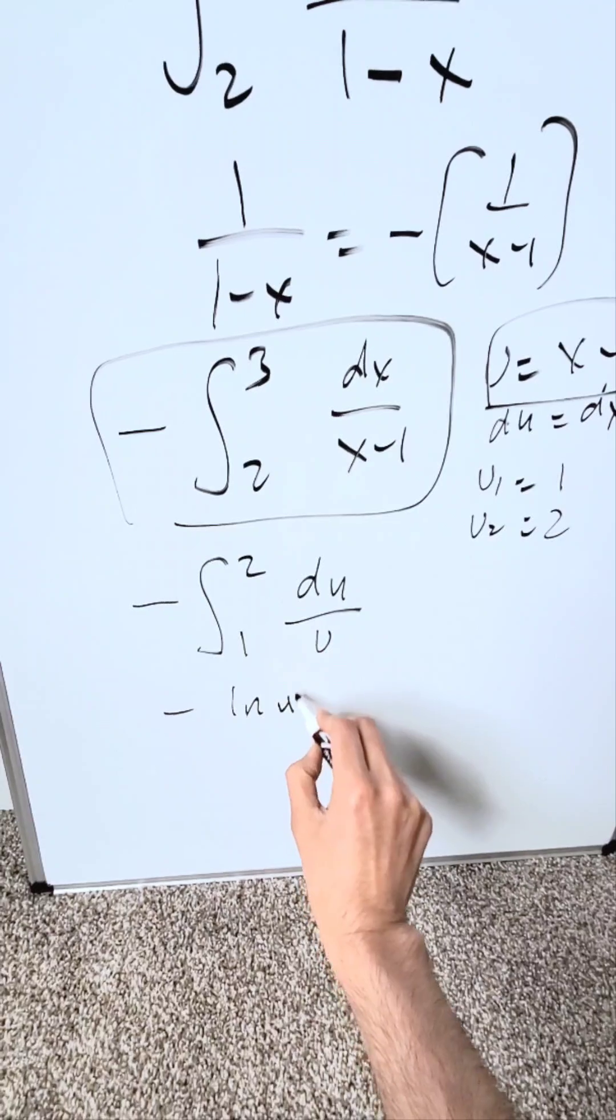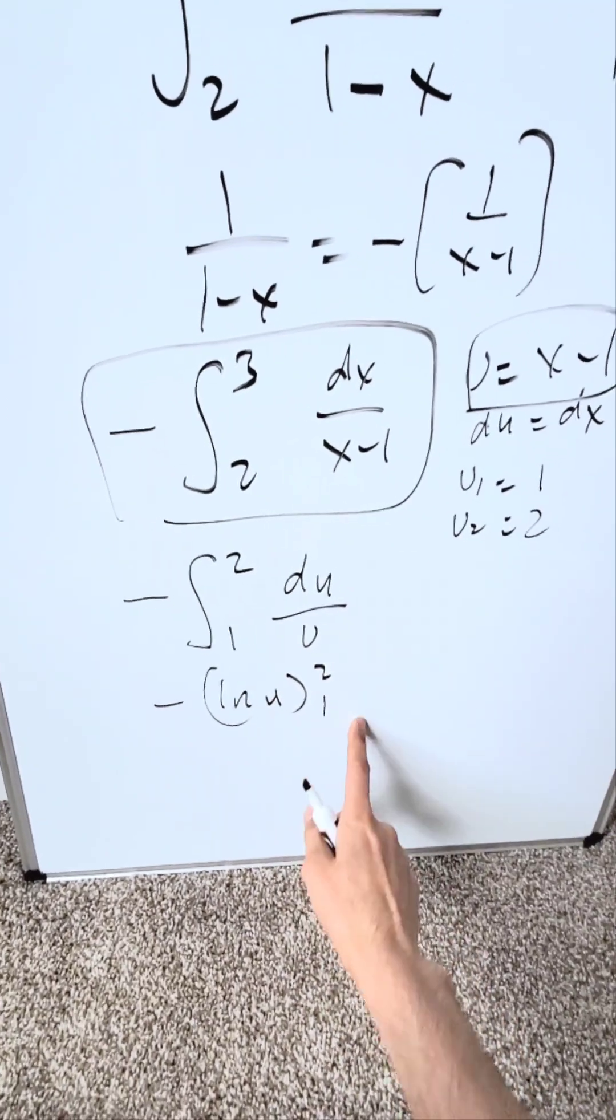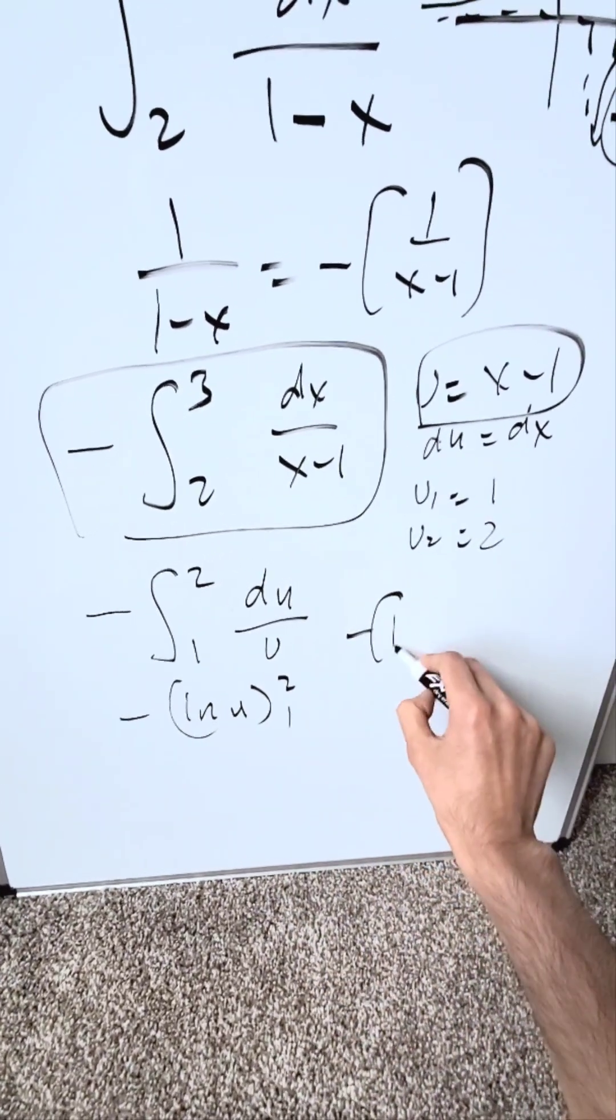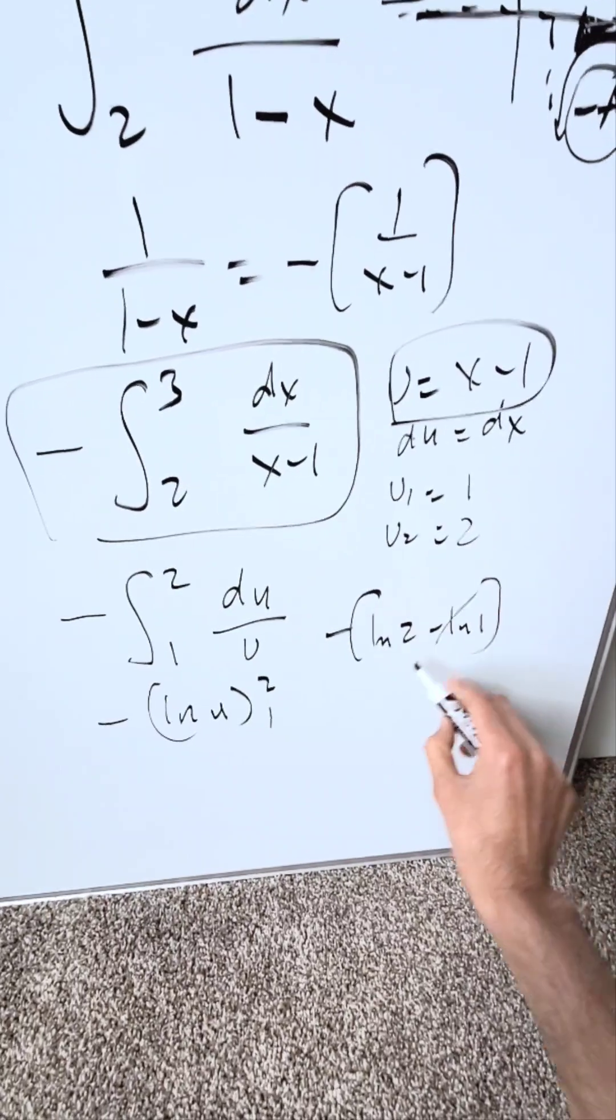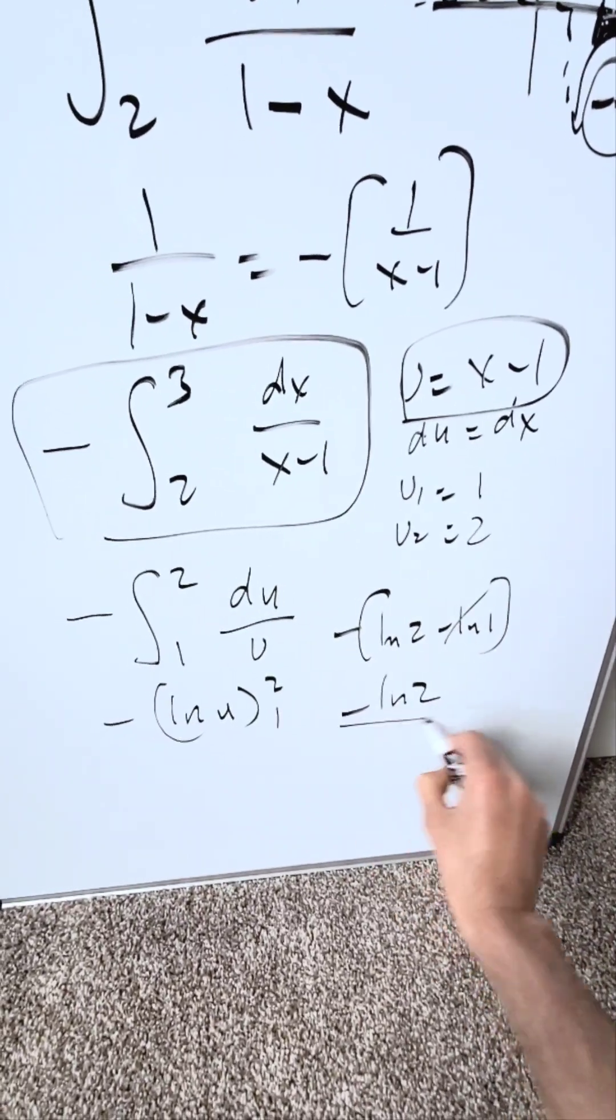I have minus natural log u. I have a 2 and 1. You are looking here at minus natural log 2 minus natural log 1. You know this is a 0. Your end result is minus natural log 2. It's correct.